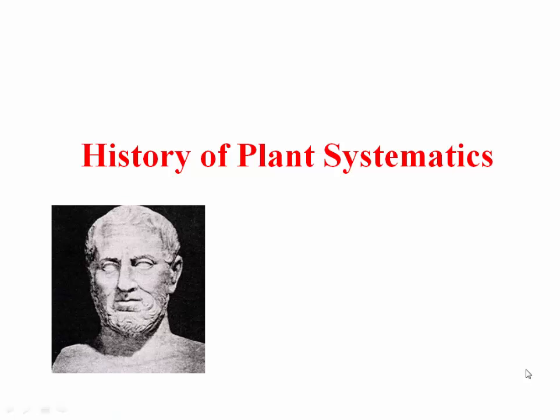We're going to consider the history of plant systematics and systematic thought. When we look back at history, we can get a sense of how things happened in a way that gave us our modern world. Things that we think about today didn't just magically appear in our minds; they exist because of the history we've gone through. A study of history will help us understand why we view systematic groups and why we classify certain plants and use certain characters.